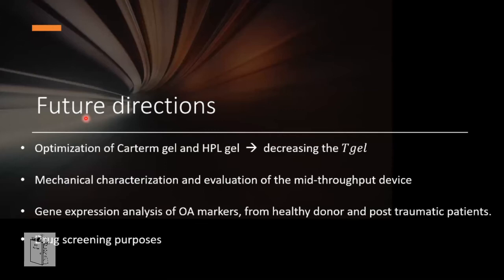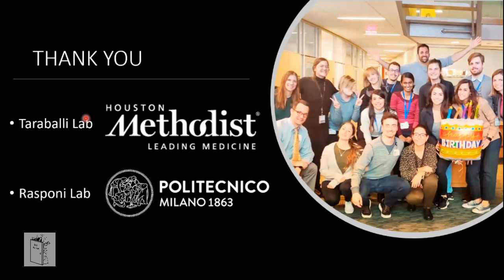As future directions: we want to optimize CARTERM and HPL gels, particularly decreasing the transition temperature. Mechanical characterization and full evaluation of the mid-throughput device need to be investigated — confirming compression works across all chambers. After stimulation, we plan to assess gene expression of specific markers from healthy donors and post-traumatic patients, to verify the chip recapitulates the same response. The ultimate aim is to use this device for drug screening purposes. Thank you for your attention.